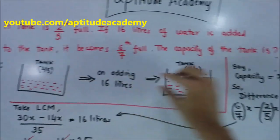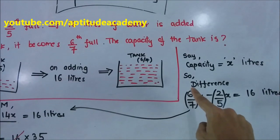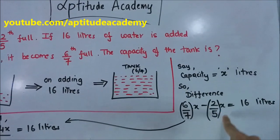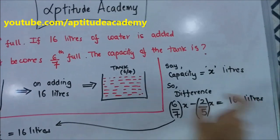So the difference, that is this much, will be 6 by 7 into x minus 2 by 5 into x. That is the 16 liters that we have added.